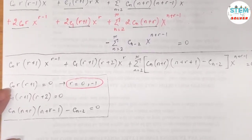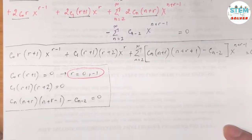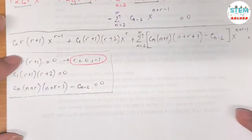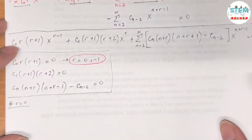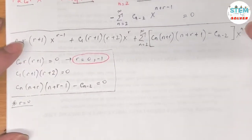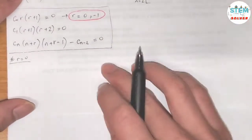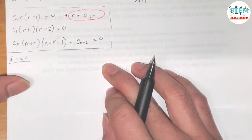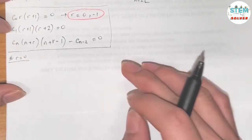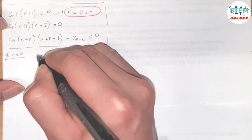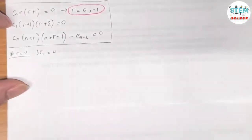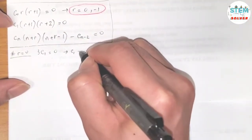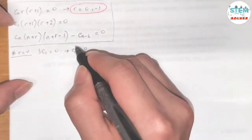For the first case, r equals 0: plug into the second equation. We get c_1 times 1 times 2 = 0, but actually it simplifies to 3c_1 equals 0, so c_1 equals 0.